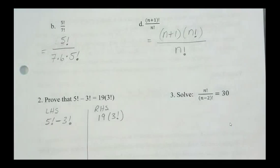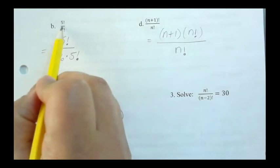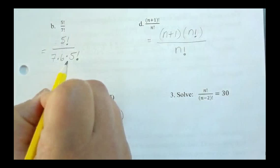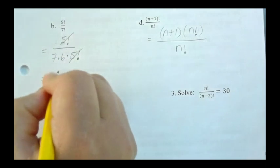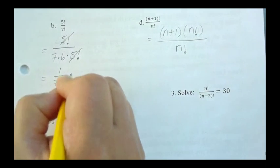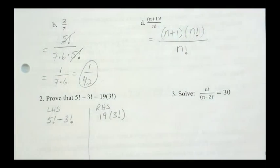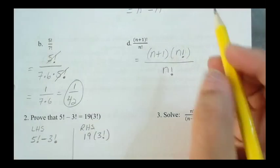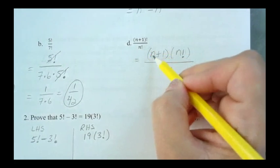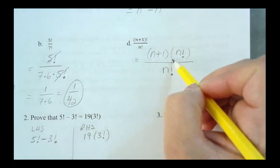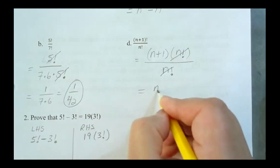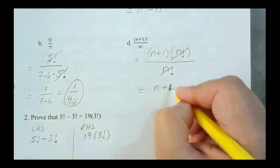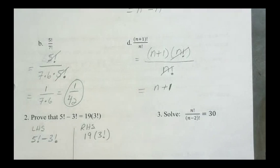Okay, so we're back. Let's look at b. So you've got 5 factorial over 7 factorial. You can expand the 7 factorial so that it's 7 times 6 times 5 factorial, and then these 5 factorials reduce, and then you end up with 1 over 7 times 6, which is 1 over 42. And for d, we can expand this n plus 1 factorial so that it's n plus 1 times n factorial. And then we've got an n factorial here, so those two cancel, and we end up with n plus 1.